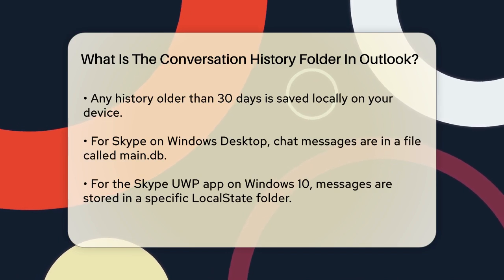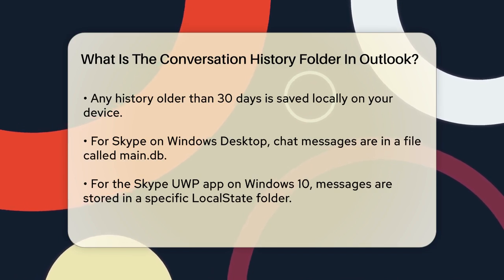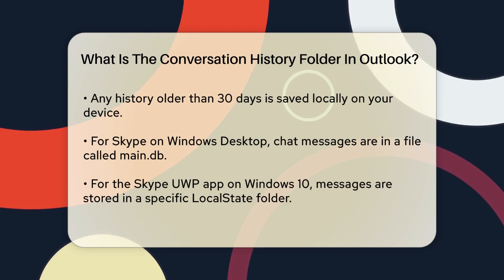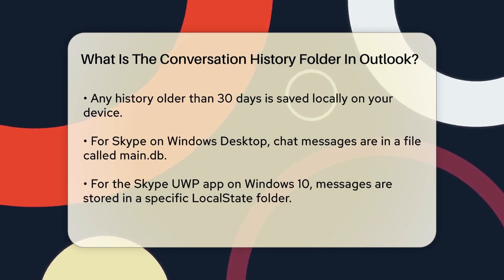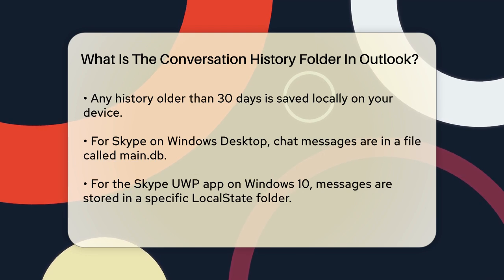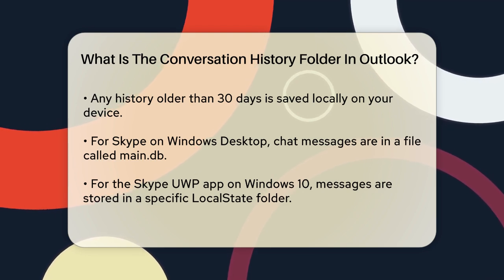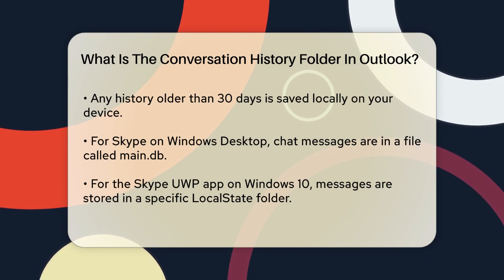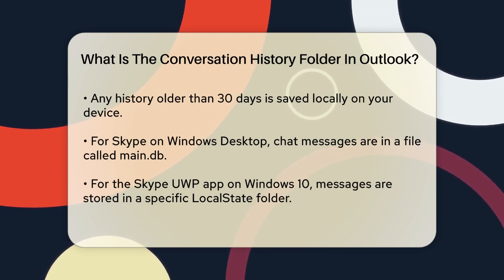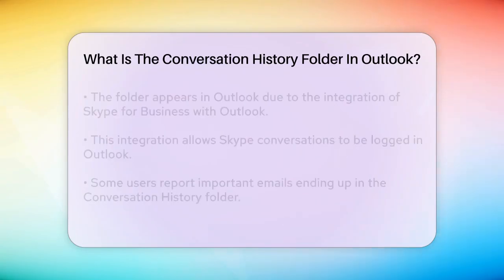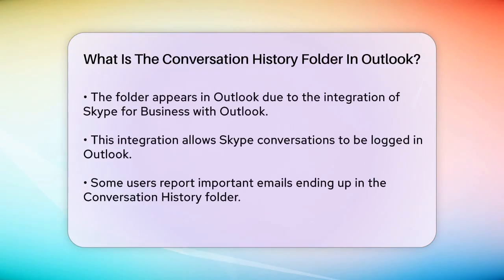For example, if you're using Skype for Windows Desktop, your chat messages are saved in a file called main.db, located in the AppData\Skype\username folder. If you're using the Skype UWP app on Windows 10, the messages are saved in the Local\Packages\Microsoft.SkypeApp\LocalState\username folder.